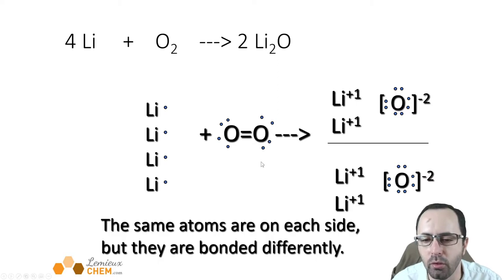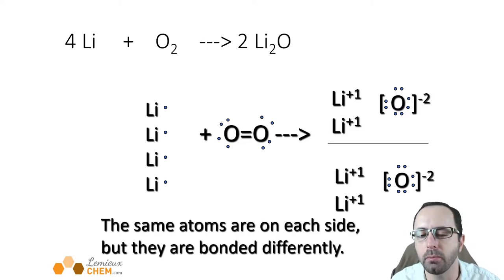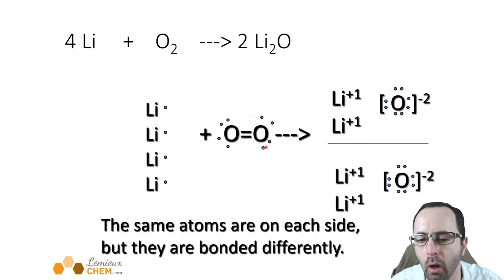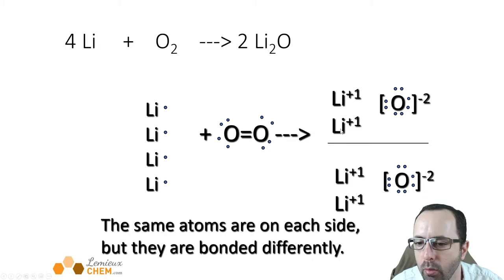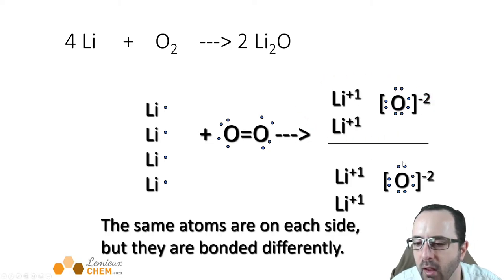We haven't talked about how to make Lewis structures of molecules yet, but we will. You can see there is a double line between the two oxygen atoms, indicating what's known as a double covalent bond — we'll talk about those as we move forward. There are little dots to represent the valence electrons of oxygen. Notice there are two oxygen atoms in the one oxygen molecule. At the end, we get two formula units of lithium oxide, separated here by this line. In each unit of lithium oxide, we have two lithium ions, each positive one, and one oxide anion that's negative two.